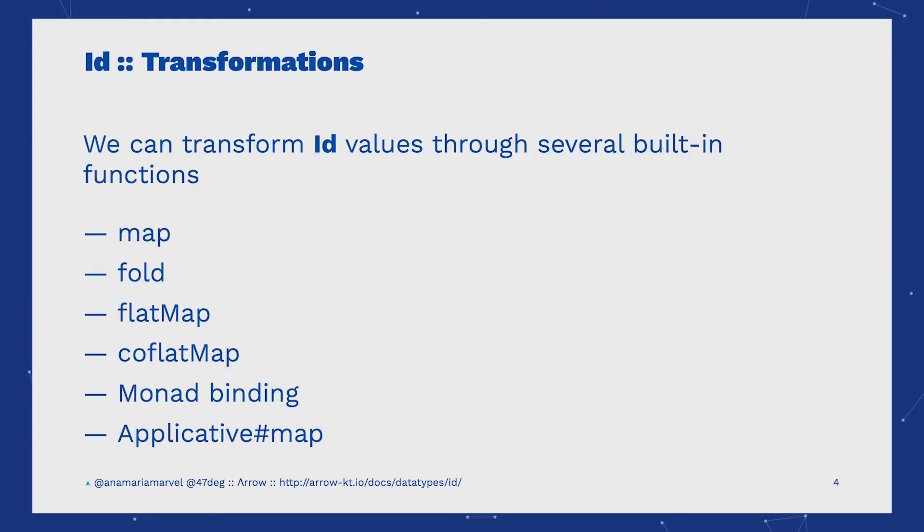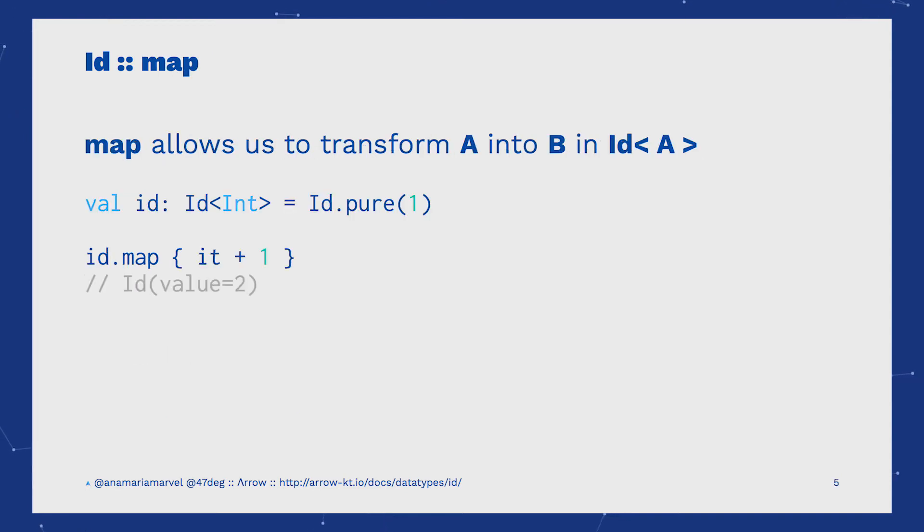ID comes with a lot of combinators and methods such as map, fold, flatMap, and many more. Map allows us to transform the inner value of an ID from one value to another.